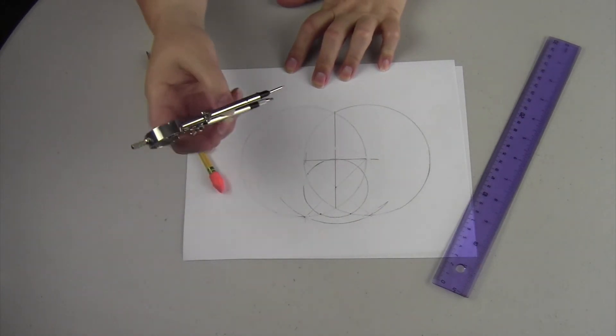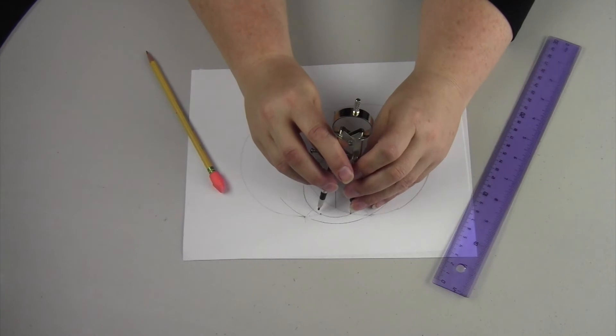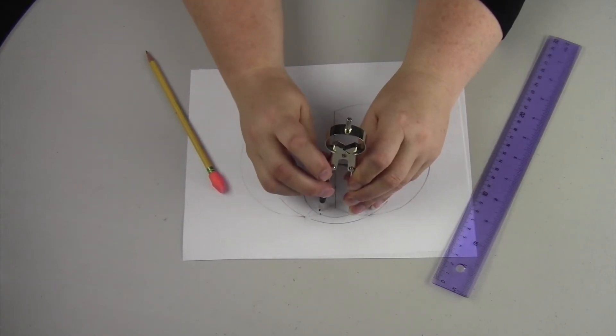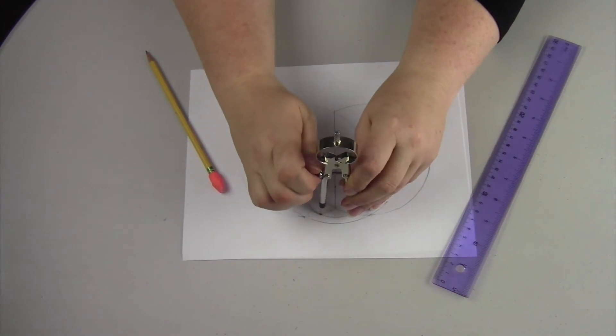So now we're going to open up our compass just to those points. We're going to adjust our compass to make it a little bit tighter. There we go.